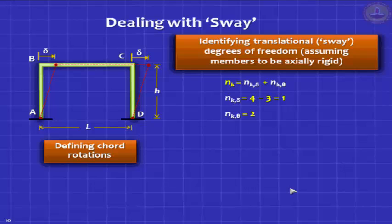To convert it into a chord rotation, you will find that member BC will never undergo a chord rotation, because it's going to always stay horizontal. But AB and CD will undergo clockwise chord rotation, if you assume delta to be positive to the right. And assuming tan theta or sin theta to be equal to theta, because those displacements are very small, you find phi AB and phi CD are both equal to delta by H. Very easy.